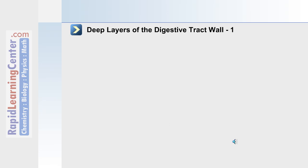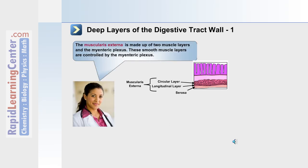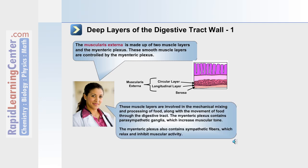The next layer of the digestive tract wall is the muscularis externa. This contains the smooth muscle layers that mix the food and move it along the tract. These muscles are controlled by the myenteric plexus. Parasympathetic ganglia increase muscular tone, whereas sympathetic fibers relax and inhibit muscular activity within the digestive tract.